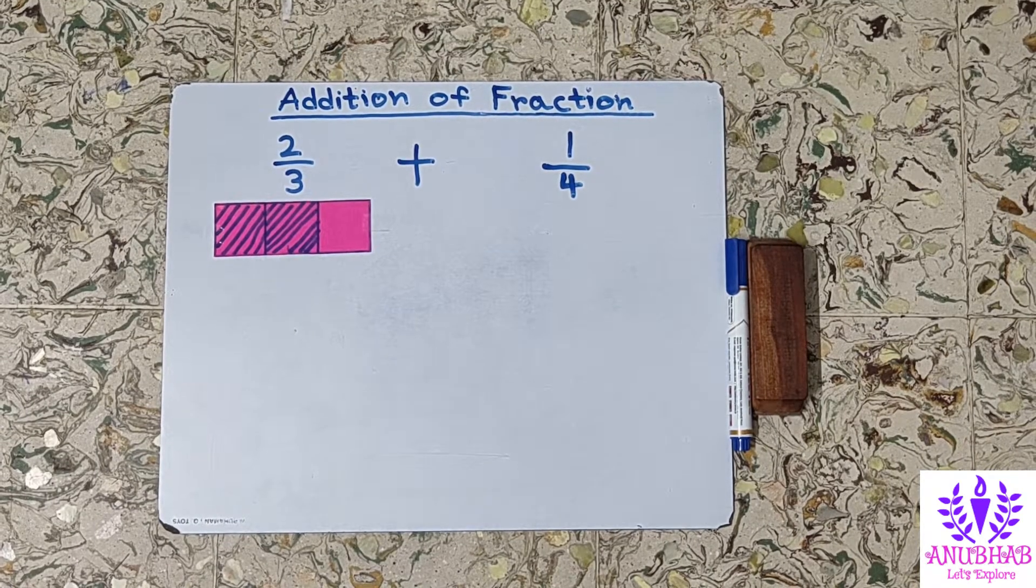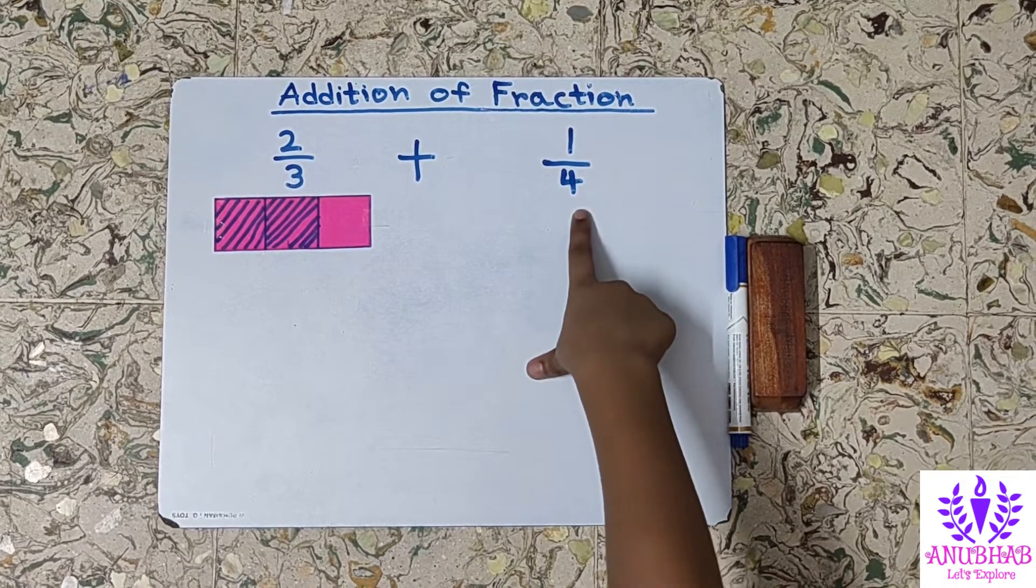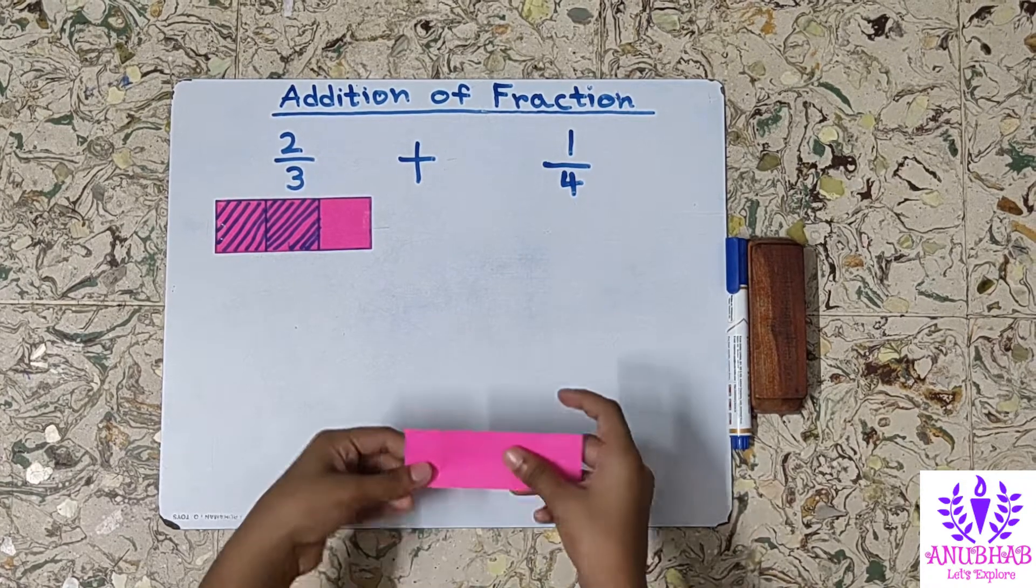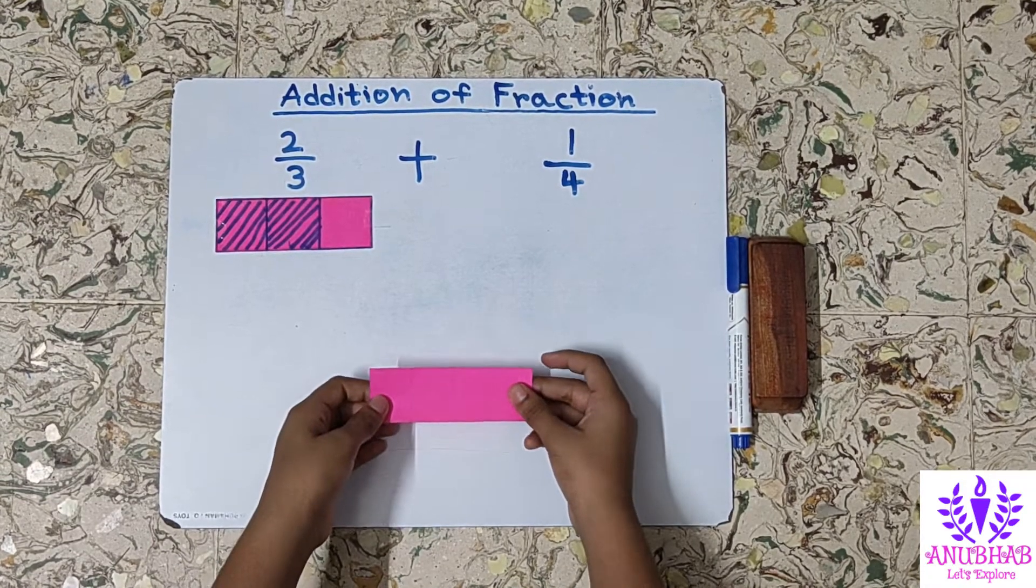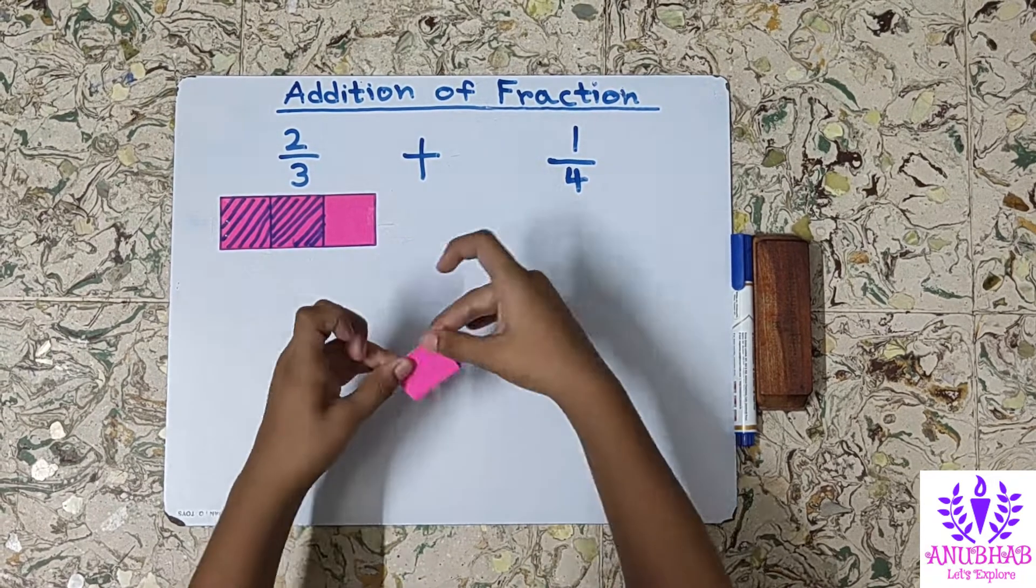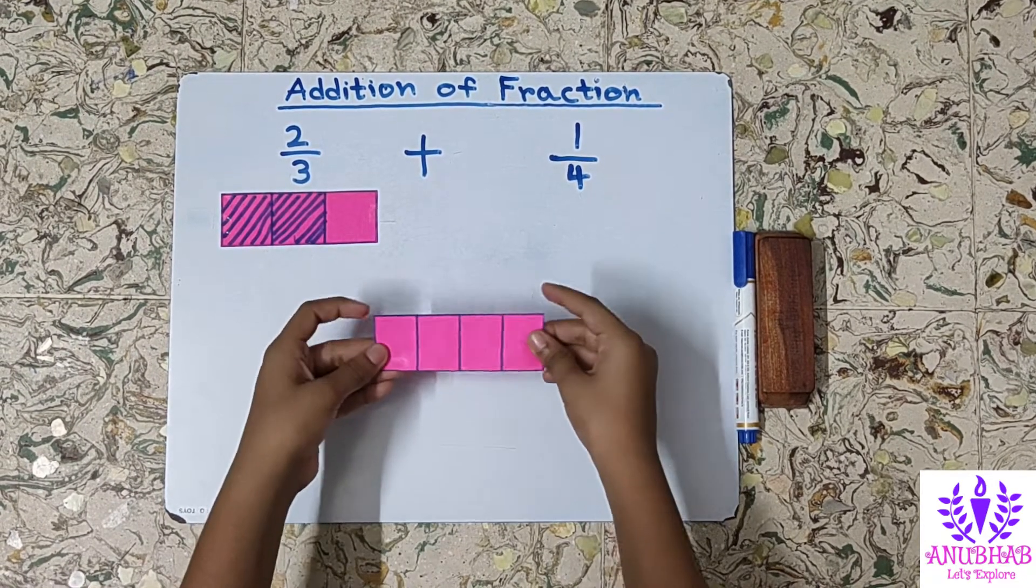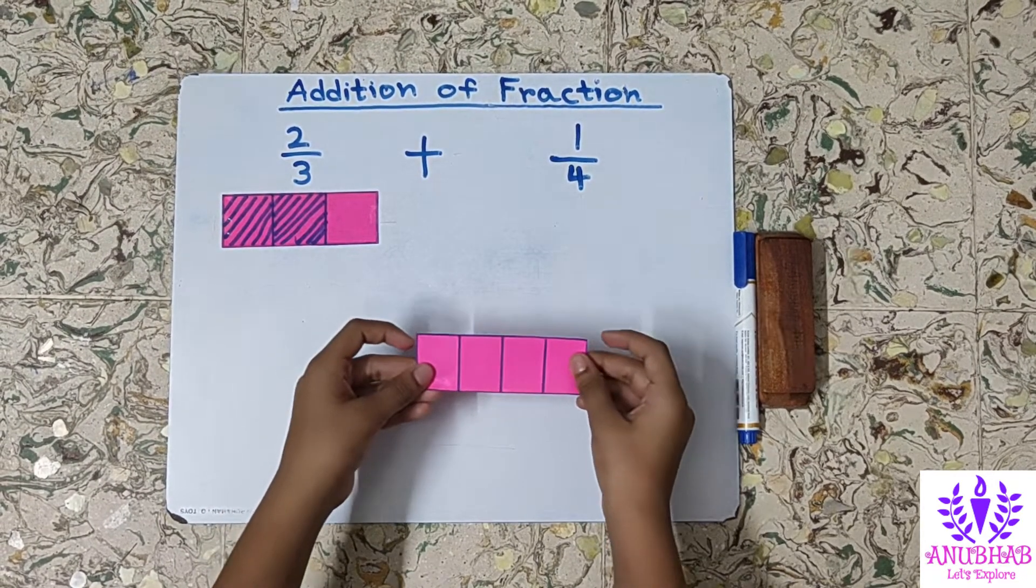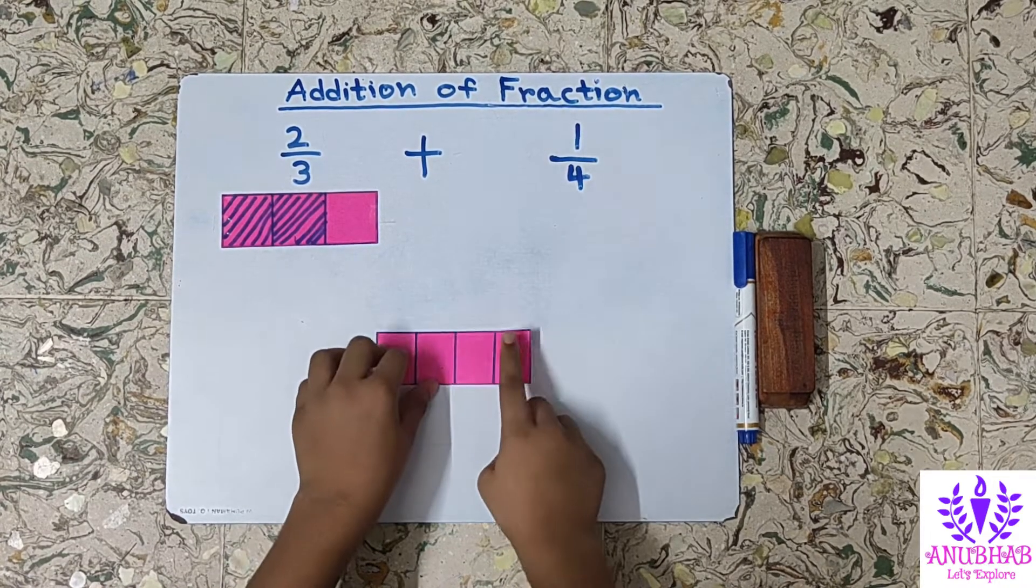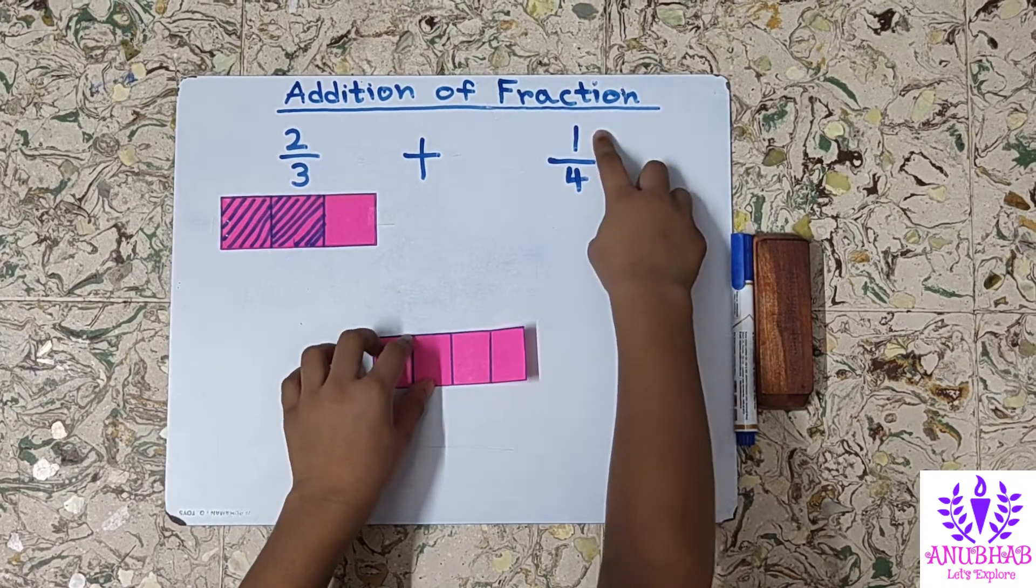Now I will represent 1 by 4 with the help of strips of colored paper. Now we will fold it into 4 equal parts. Now we have 4 equal parts. Now we will shade 1 part among these 4 parts because the numerator is 1.